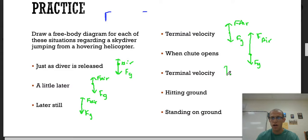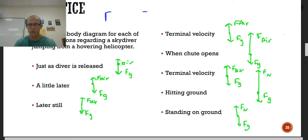Then eventually, our air resistance is going to slow us down until we reach a new terminal velocity. So the air resistance is going to get less, and then Fg equals F air again. Then we're hitting the ground, so normal force is bigger than the gravitational force. And once we're standing on the ground, the normal force is equal to gravitational force.